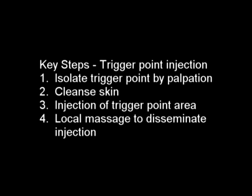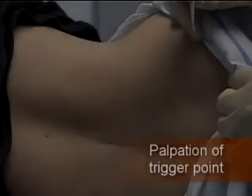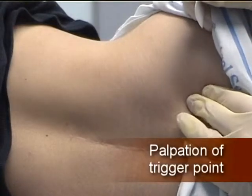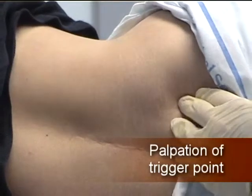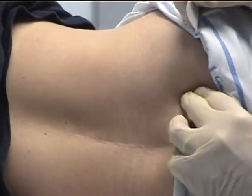Key steps of trigger point injection include isolation of the trigger point by palpation, skin cleansing, injection of the trigger point area, and local massage. Inject painful trigger points with a combination of local anesthetics and steroids to obtain immediate and long-term pain relief.